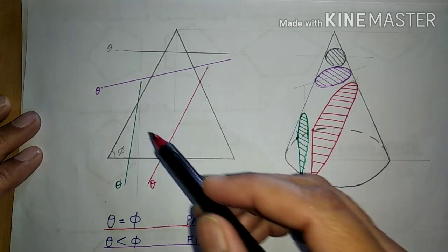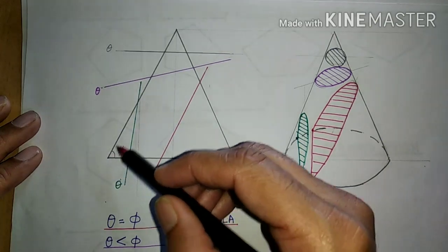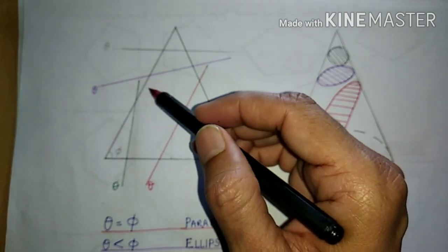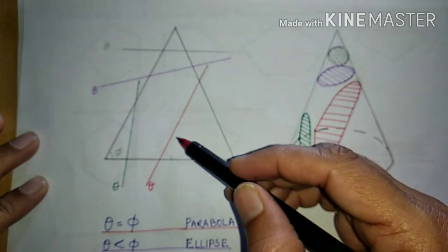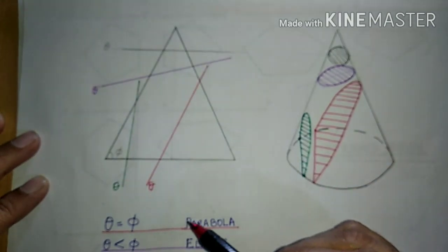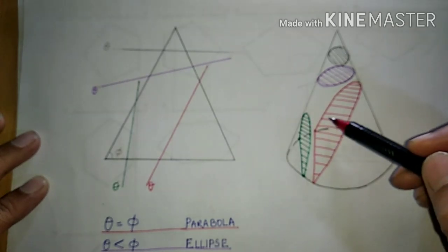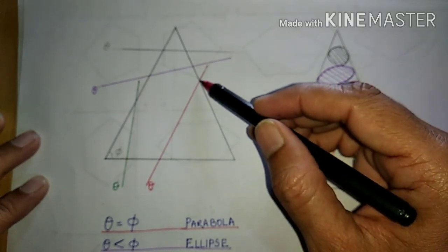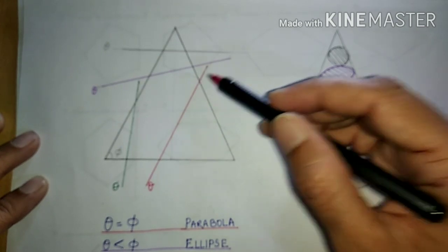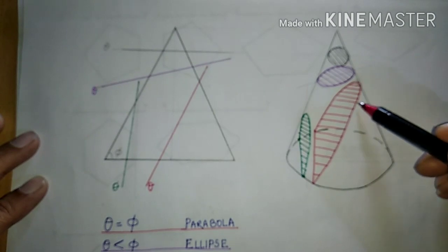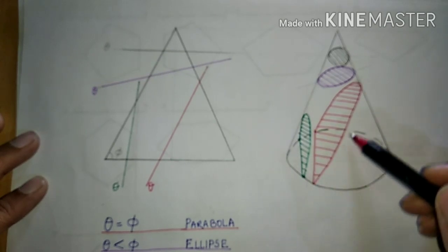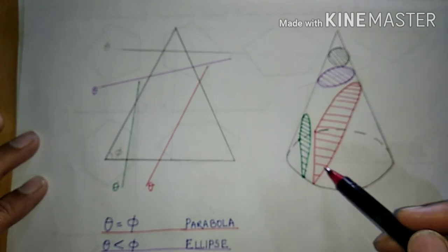If we pass the cutting plane line parallel to any one of the generators, where theta equals phi, we will get a parabola. It will cut one of the extreme generators and create a curvature on the curved surface, forming an edge. So we get a parabola in shape, and that upper part will be removed.